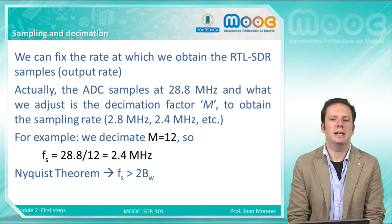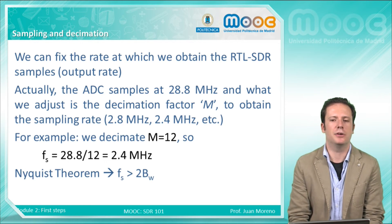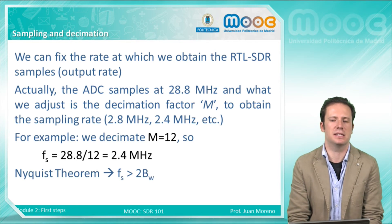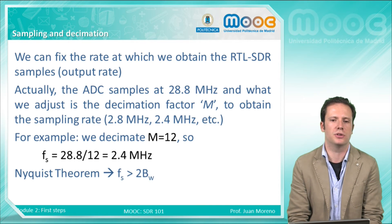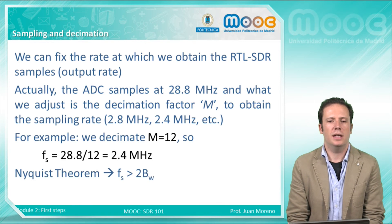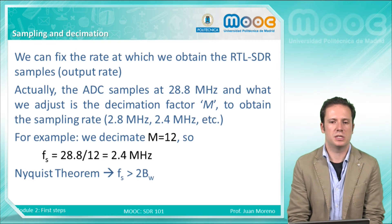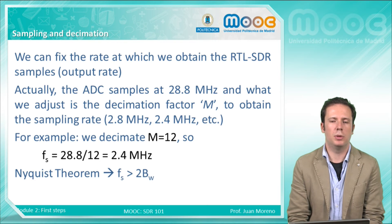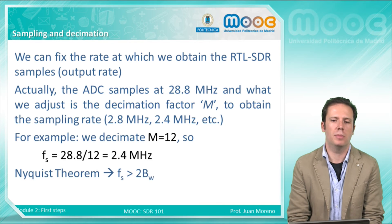Regarding sampling and decimation — this is very important — the RTL-SDR actually samples the signal at a higher rate of 28.8 MHz and then decimates the signal, so what we control is the decimation factor. To close this topic, we need to remember the Nyquist theorem, which requires us to sample the signal at a rate at least twice the maximum bandwidth of the signal.